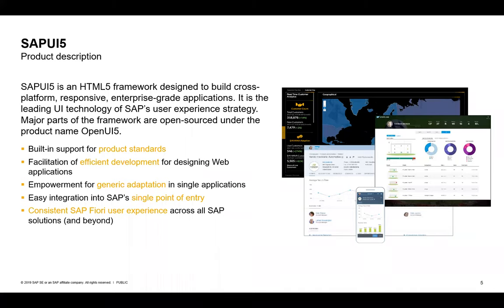UI5 is an HTML5 framework — it's the web UI technology of SAP to implement Fiori applications, but also other applications which want to make use of all the capabilities of UI5 for a web application. We have support for what we call an SAP product standard — all the things you'd expect from an SAP technology: security, accessibility, and all the things you'd expect from an enterprise-grade software product.